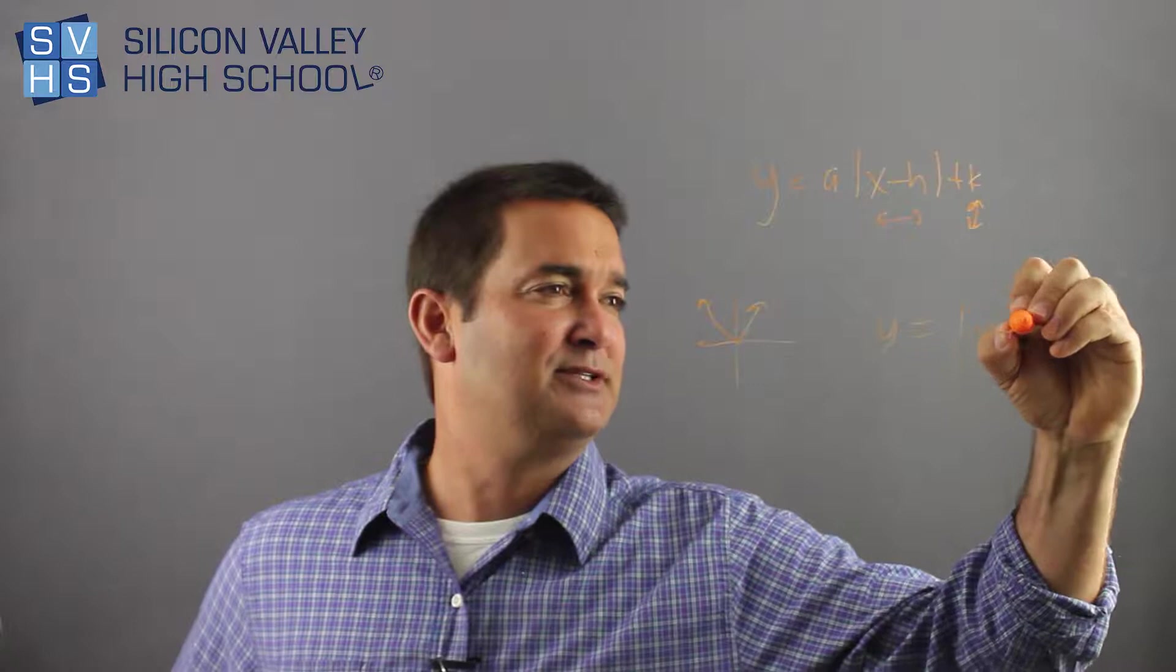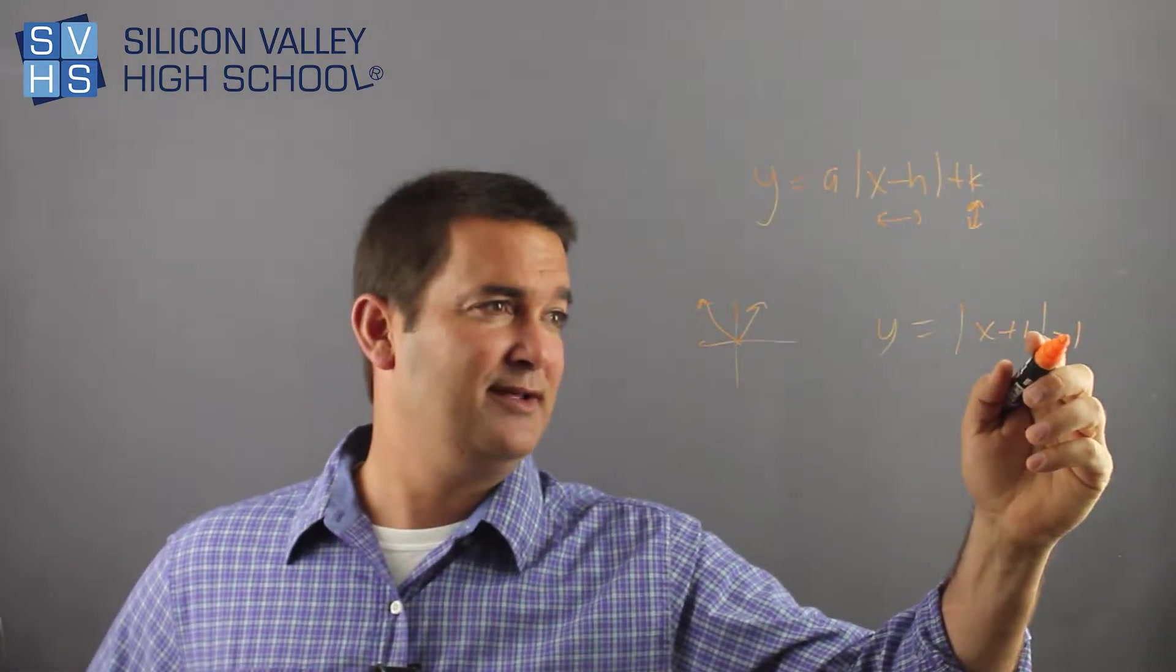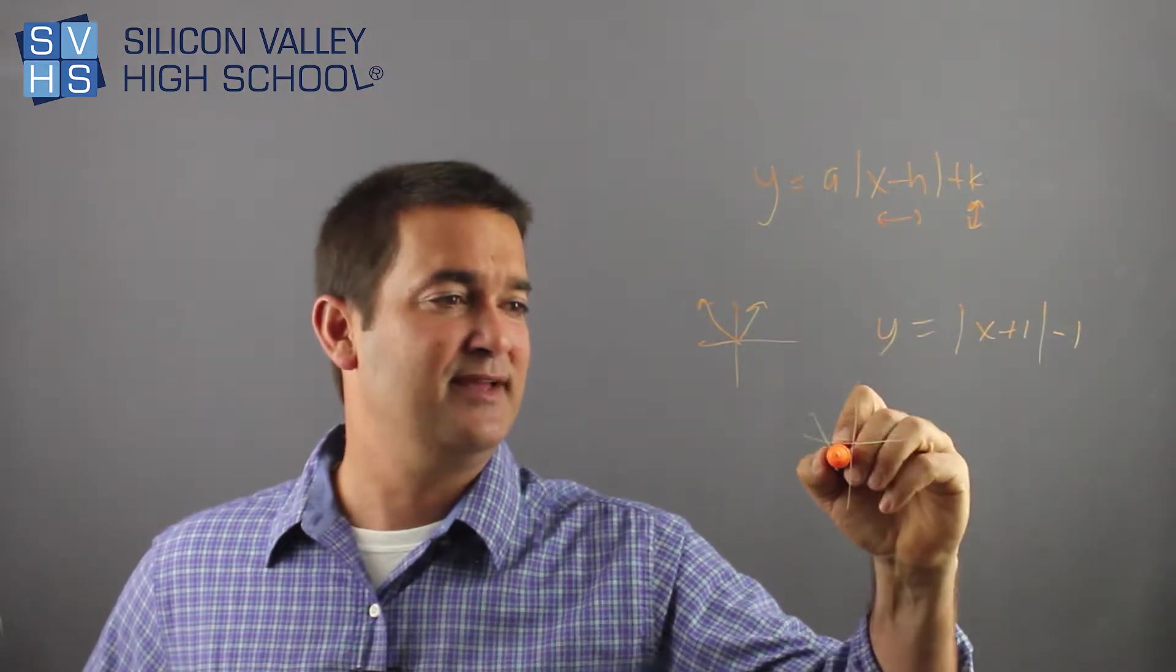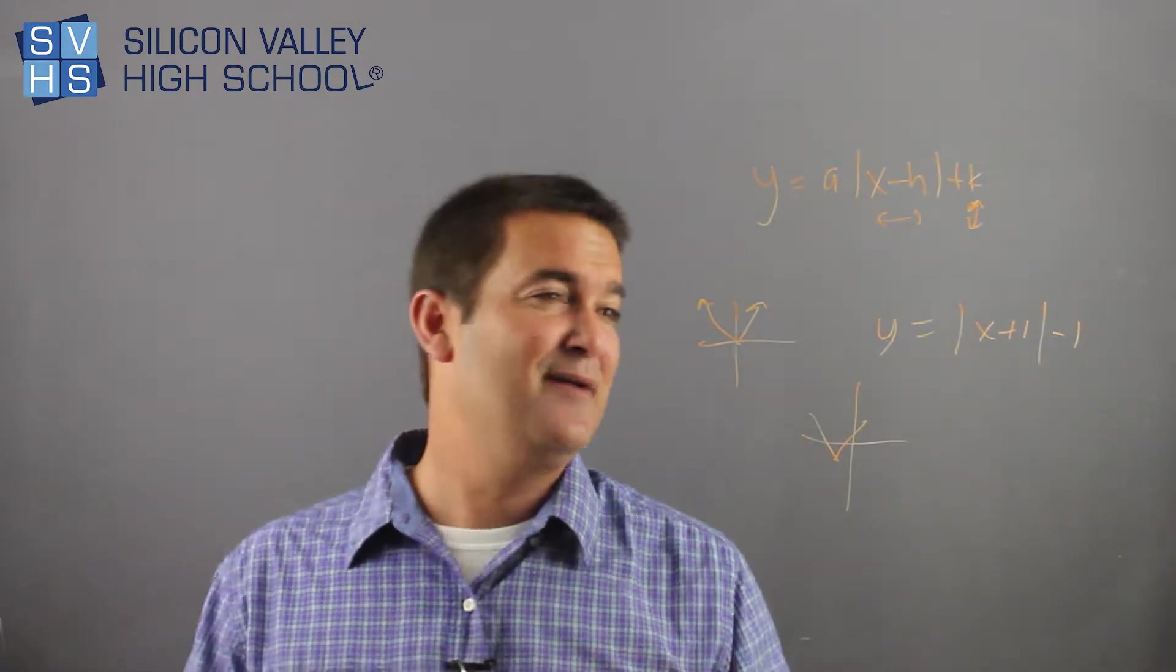If you add Y equals X plus 1 minus 1, you'd say that goes down 1 and it goes left 1. All right? So down 1, left 1. Here's my V. The minute you add an A in front of that, you start messing with how steep it is.